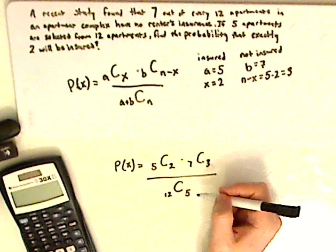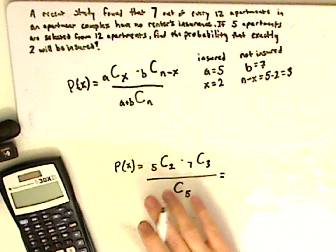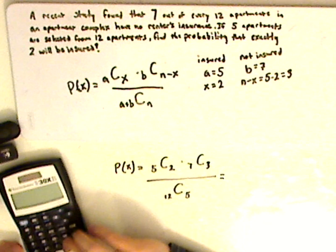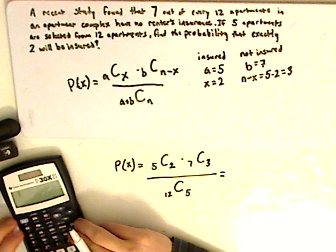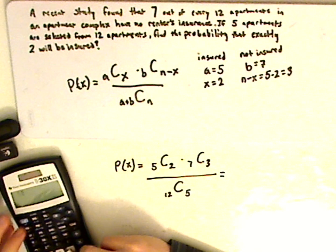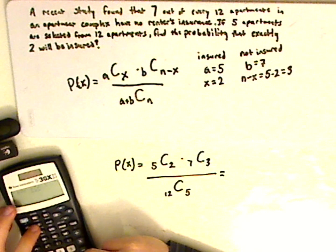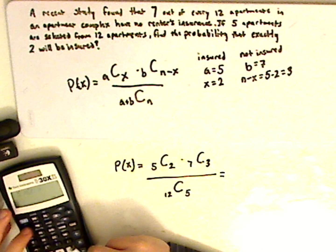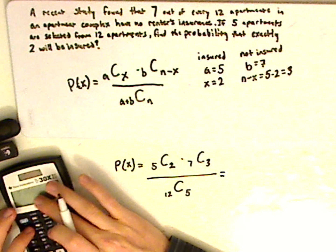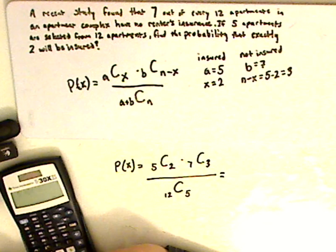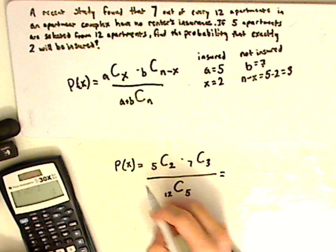So type those all in, and what I'm going to do is I'm just going to type them in my calculator, find each of those. So 5 combinations, and then you're going to push the PRB, which stands for probability, and then you have NCR2, and that gives me 10.